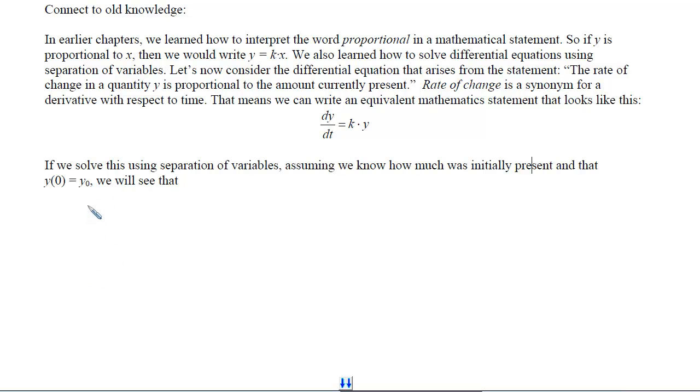I start with dy/dt equals ky. I then separate the variables by moving the y underneath the dy and leaving the k over with the dt. Now if I integrate both sides, I will get the natural log of the absolute value of y equals kt plus some random constant.